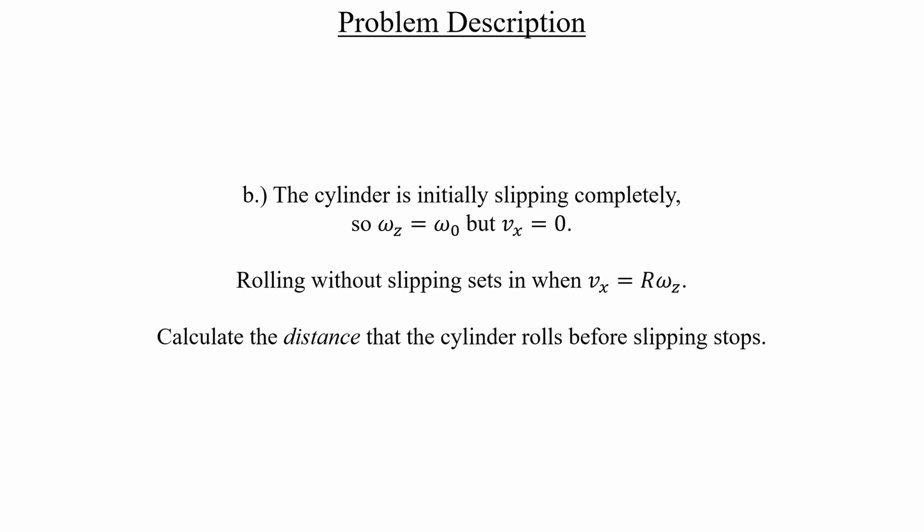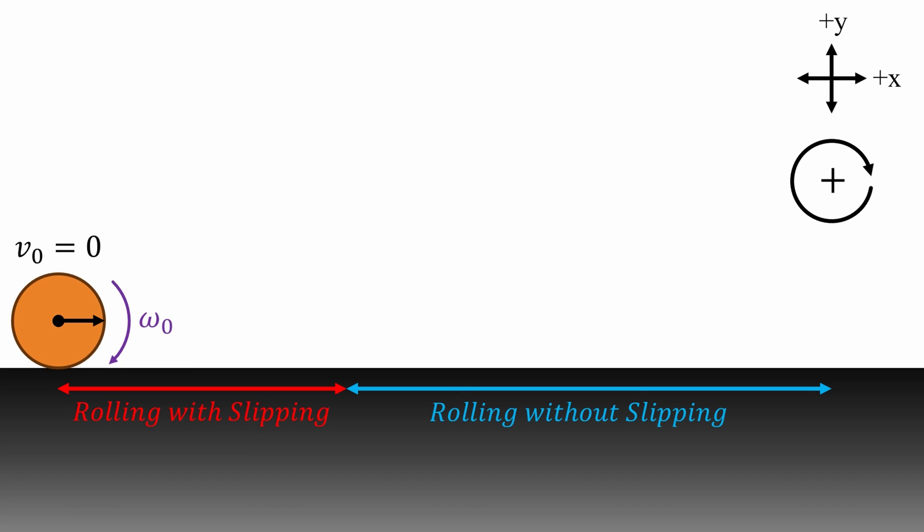In part B, we're going to figure out the distance that the cylinder moves through as it rolls with slipping. Here's our picture again. The problem description says that the moment we set this cylinder down onto the surface, it's rotating at a rate of omega naught, and there is no initial center of mass velocity.